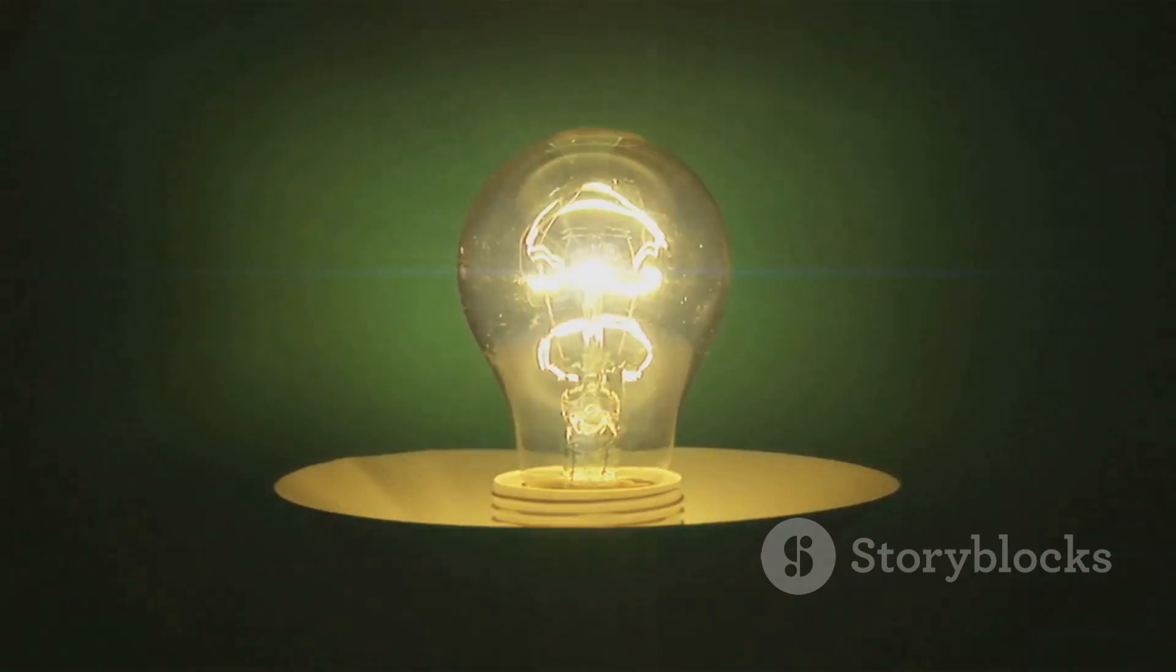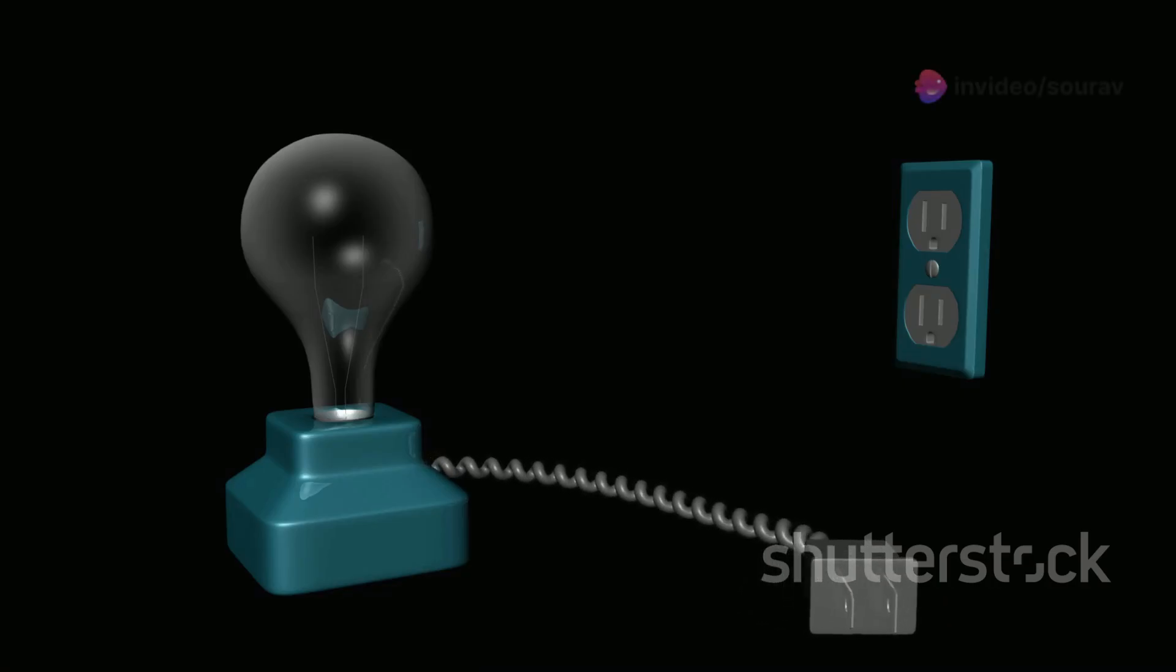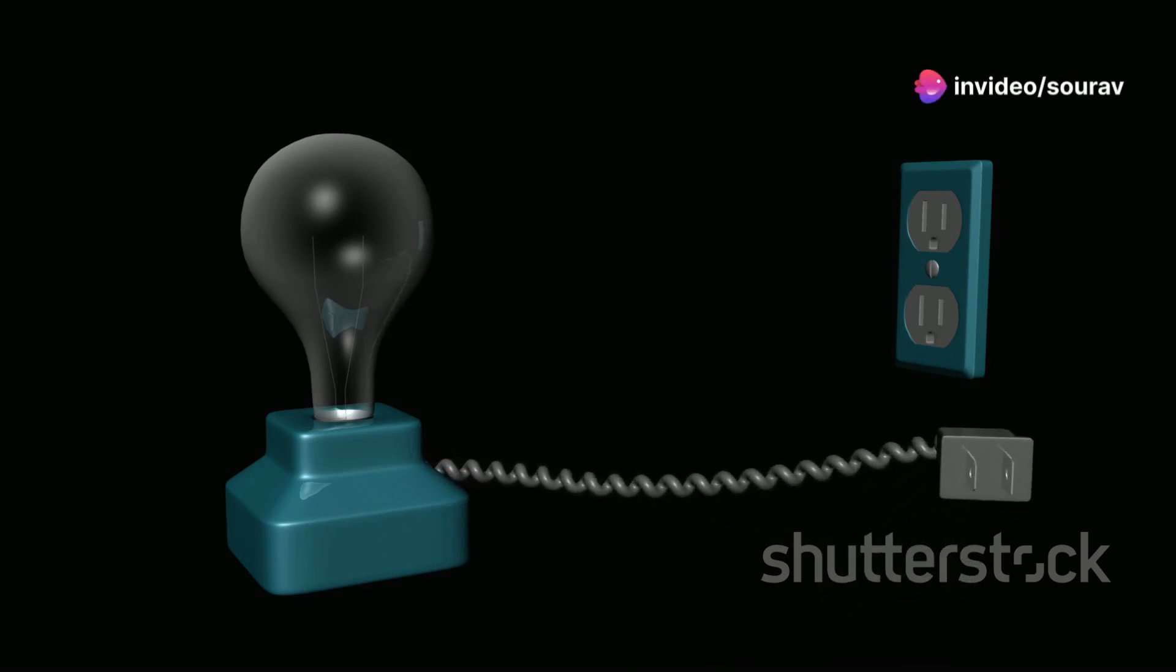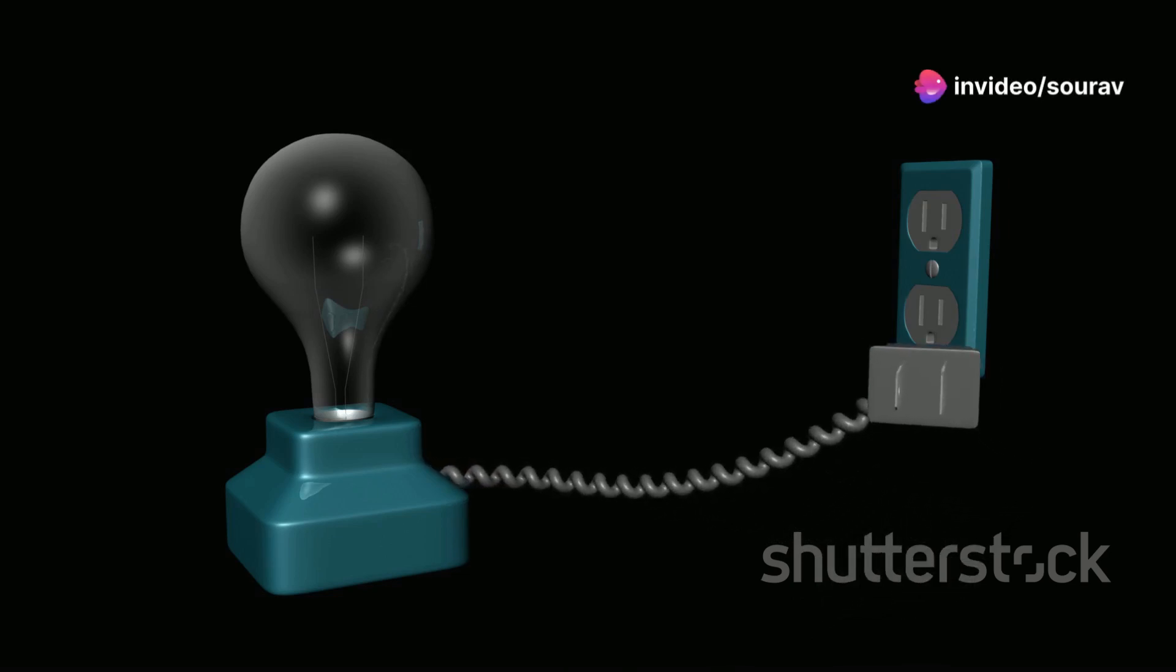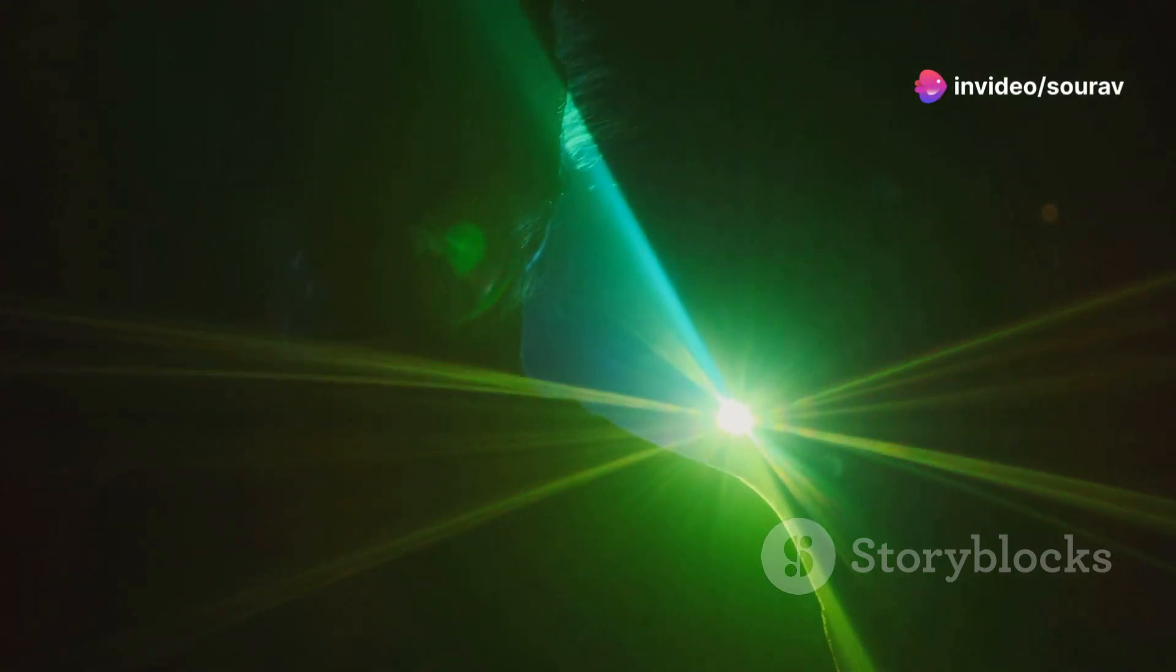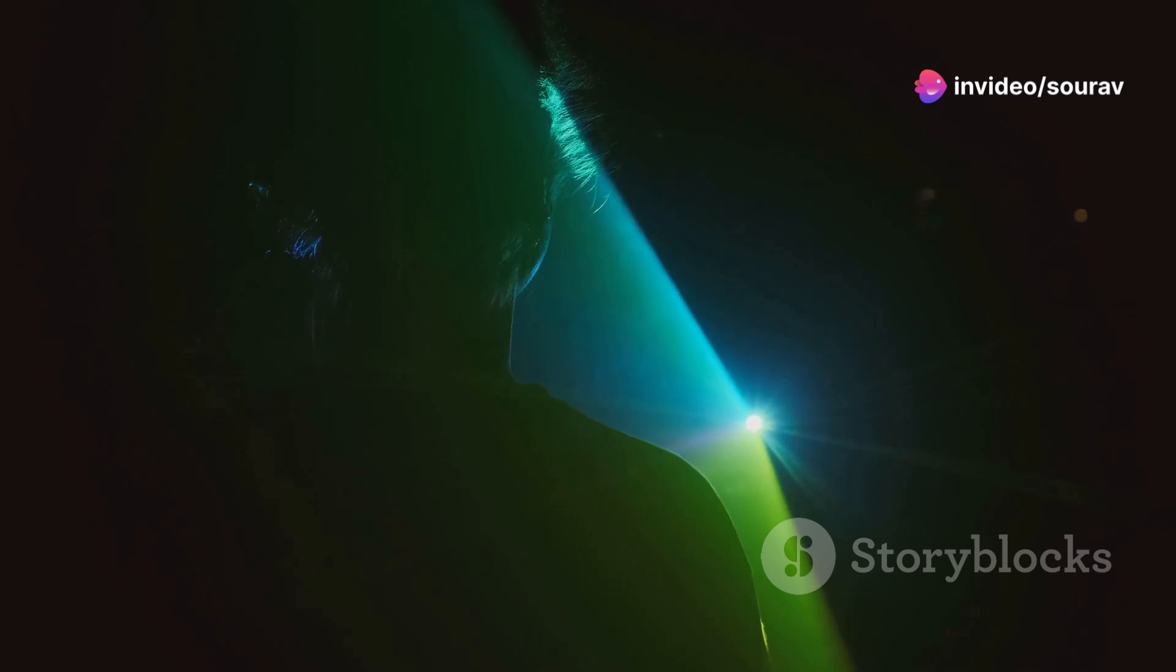Electromagnetism is responsible for light, electricity, and magnetism. This force is much stronger than gravity and affects particles with electric charge. The boson that carries the electromagnetic force is the photon. Photons are massless particles that travel at the speed of light. Photons are constantly traveling around us, allowing us to see the world. They are the reason we can perceive light and color.